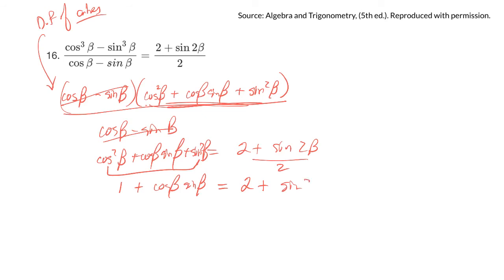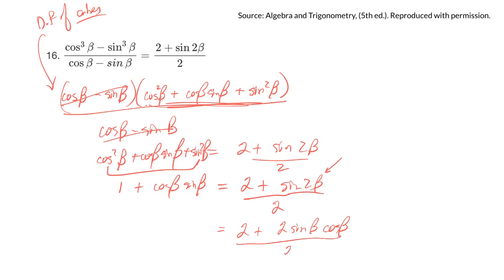The sin 2β is a double angle identity, so sin 2β equals 2 sin β cos β. Substituting: (2 plus 2 sin β cos β) over 2, and dividing by 2 gives 1 plus sin β cos β. And that's exactly what I have on the other side. Done. QED. Interesting one — had to use the double-angle identity.